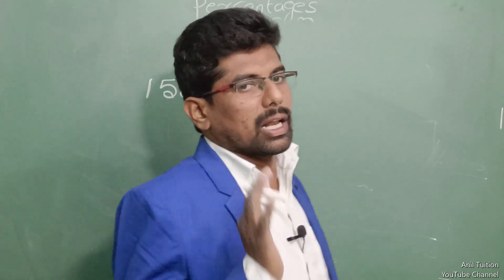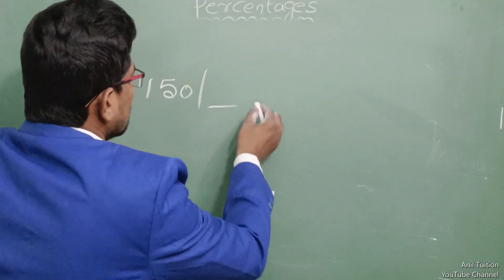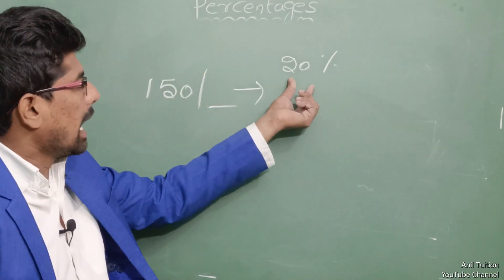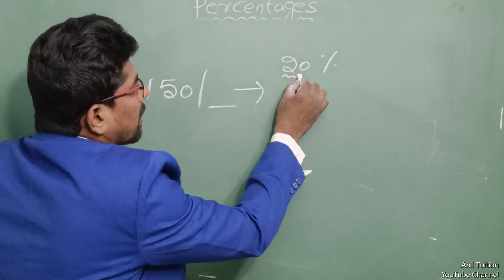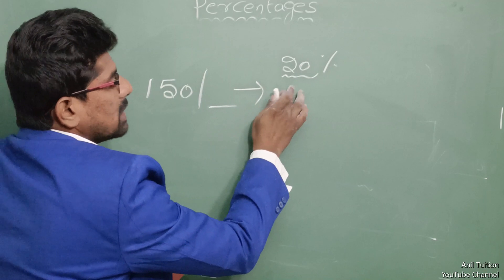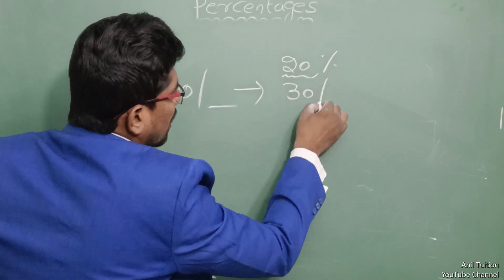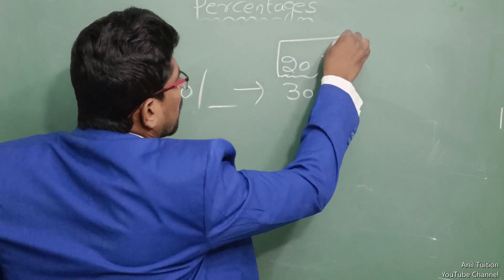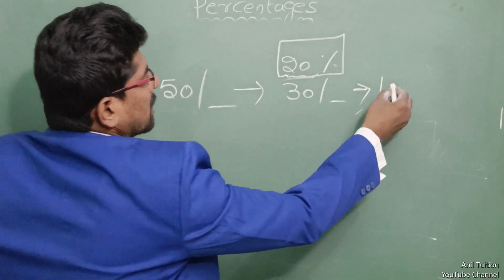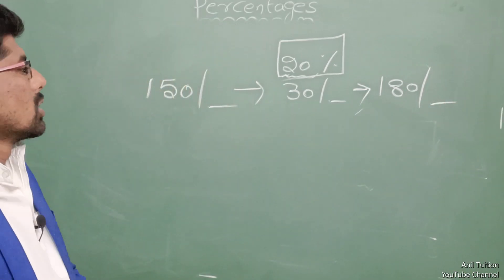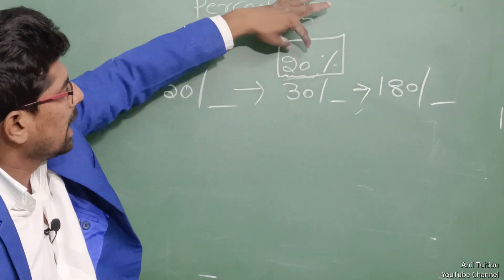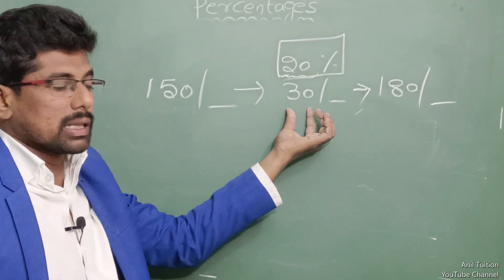For example, your salary is 150 rupees. Your company gives you a 20% salary increase. So 10% of 150 is 15. So 20% means 15 plus 15, which is 30 rupees. Total salary is 150 plus 30 equals 180 rupees. So 180 rupees is your new salary. The increase amount is 30 rupees.